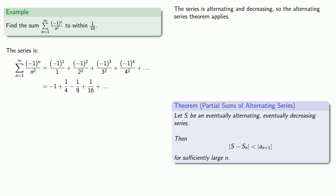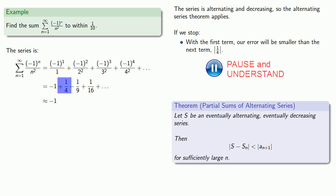And again, the way to think about this is that the error in using the first n terms of the series is less than the next term. So if I stop with the first term, our error will be smaller than the next term, the absolute value of one quarter. Since we wanted to get our series sum to within one tenth, this is too big.